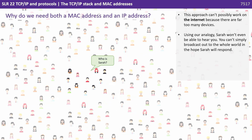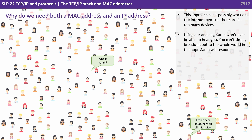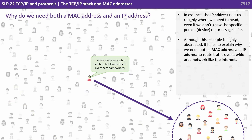This approach can't possibly work on the internet because there are far too many devices. Using our analogy, Sarah won't even be able to hear you — you can't simply broadcast to the whole world in the hope that Sarah will respond. In essence, the IP address tells us roughly where we need to head, even if we don't know the specific device our message is for. This helps explain why we need both a MAC address and an IP address to route traffic over a wide area network like the internet.